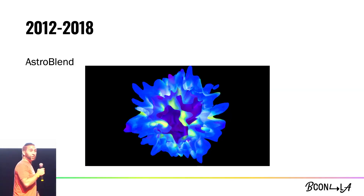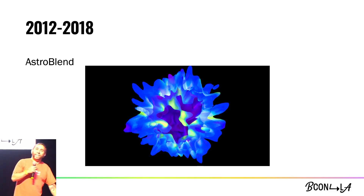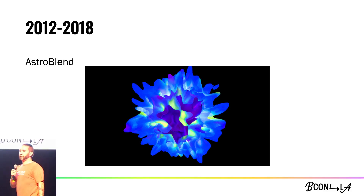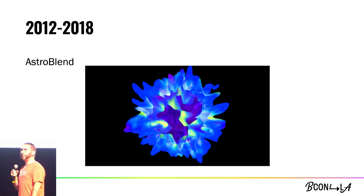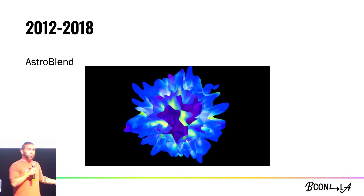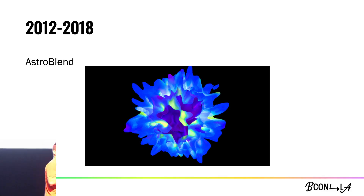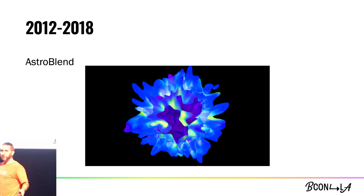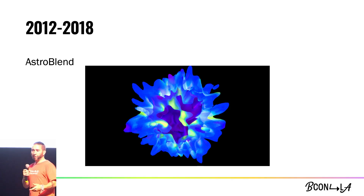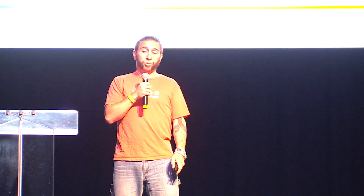Another fun science use was AstroBlend, dealing with gigantic sources of data for astrophysics, by Dr. Jim Naiman. It was basically a fork of Blender to handle gigantic data coming in from satellites for managing astrophysics simulations and visualizing all of that data in a way that actually makes sense and looks pretty.